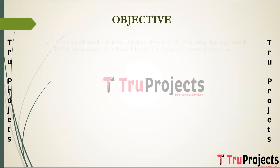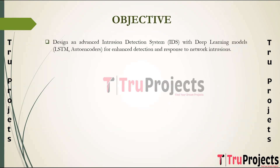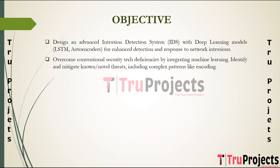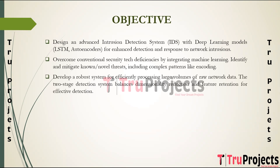The objective is to design and implement a cutting-edge IDS incorporating deep learning models like LSTM and autoencoders. The system aims to significantly enhance the capability to detect and respond to network intrusions effectively, overcoming deficiencies of conventional security technologies. The project aims to identify and mitigate both known and novel threats, including those utilizing complex patterns like encoding and obfuscation, while efficiently processing large volumes of raw network data. The proposed two-stage detection system is designed to balance dimensionality reduction and feature retention, particularly in high-dimensional and imbalanced datasets.